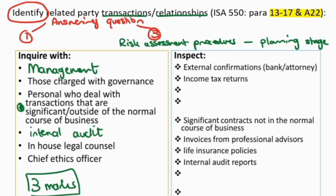As part of risk assessment procedures, we can also inspect certain things. Some examples the standard gives us include looking at external confirmations — like confirmations from banks or attorneys — to give us evidence about who related parties are. From a bank perspective, if the company is part of a group or is a holding company with subsidiaries, when you request a bank confirmation you ask for all accounts linked to that company's name, so any subsidiaries linked to their accounts would be picked up. Attorneys would also be aware because they may have drawn up contracts during purchase agreements to form part of the group. Income tax returns are another example, as companies with many subsidiaries might file together.